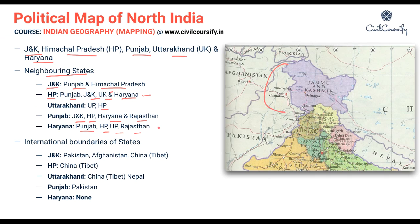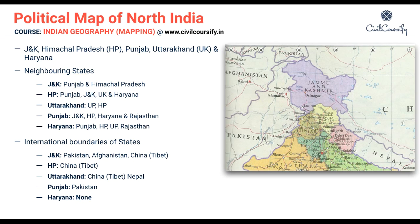Regarding international boundaries: J&K has boundaries with Pakistan, Afghanistan, and China. Himachal Pradesh has a boundary with China. Uttarakhand has boundaries with China and Nepal. Punjab has a boundary with Pakistan. Haryana does not have any international boundary, as Rajasthan and Punjab overshadow the boundary of Haryana with Pakistan.